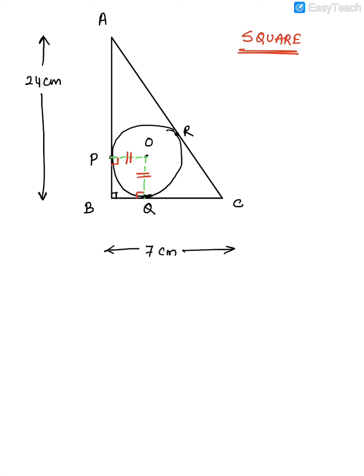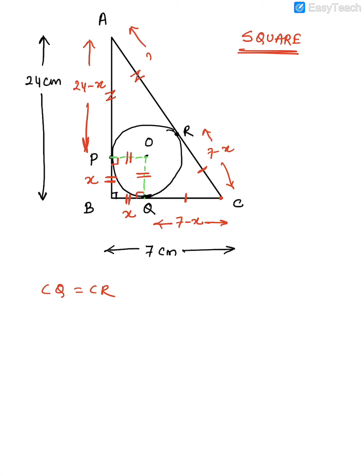Because it's a square, all sides are equal. Let each equal side be x. Then QC = 7 − x because the total was 7. Similarly, the other tangent segment from B = 24 − x. Using the property that tangents drawn from an external point are equal, CQ = CR = 7 − x, and the tangent segments from B are also 24 − x.